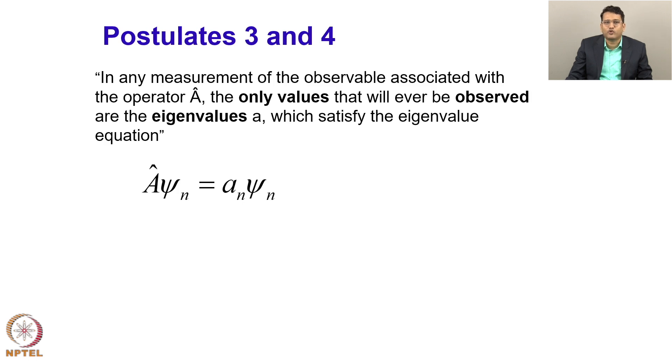The third postulate goes on to say that in any measurement of the observable associated with operator A, the only values that will ever be observed are the eigenvalues of A which satisfy the eigenvalue equation. Now, what does it mean? It means that if I make any measurement corresponding to A, I will get one of the eigenvalues of A.